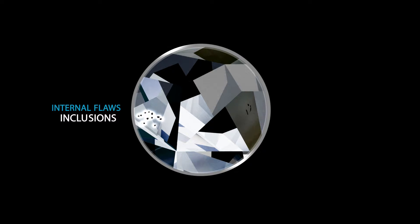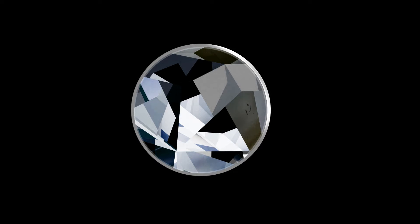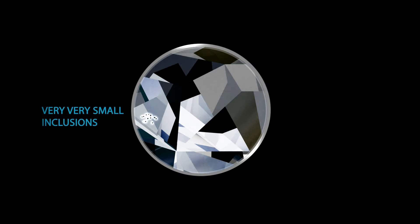Some diamonds have external flaws which are called blemishes. The size and location of these characteristics determine how the diamond is graded on a scale: flawless, FL; very very small inclusions, VVS.